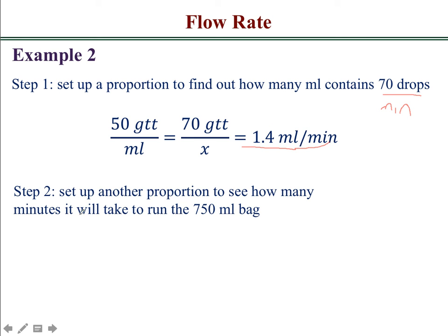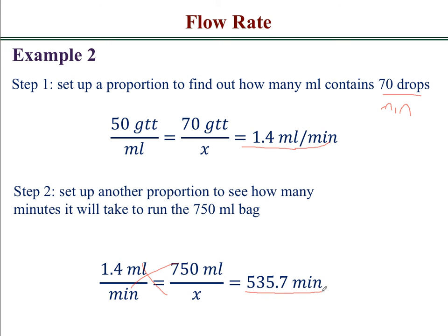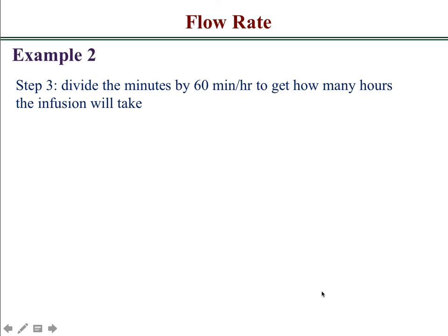The next step is to set up another proportion to see how many minutes it will take to run that 750 ml bag. This can be done so since 1.4 ml is being infused every minute, the 750 ml takes how many minutes? Once you set up the proportion and cross multiply, you come up with 535.7 minutes. Since there's 60 minutes in every hour, you just divide the 535.7 minutes by 60 minutes per hour, and that will give you the answer of 8.9 hours.